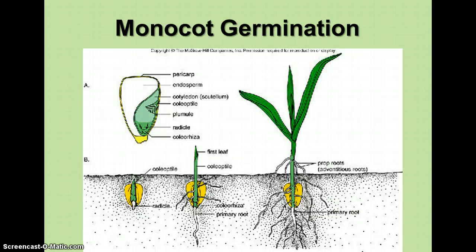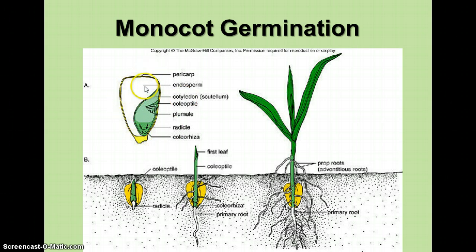Here we have a picture showing the germination of a monocot. You don't need to worry about all the terms — this just shows the different parts in the seed. The endosperm nourishes the growing embryo, and the cotyledon is the first leaf. Mono means one, so monocots have one cotyledon — one seed leaf.